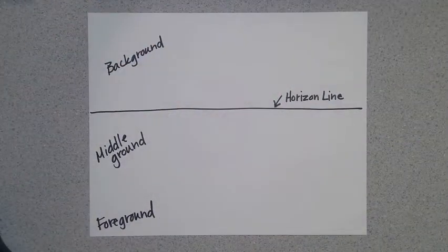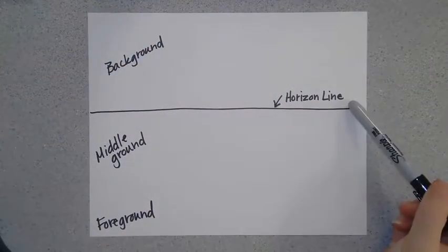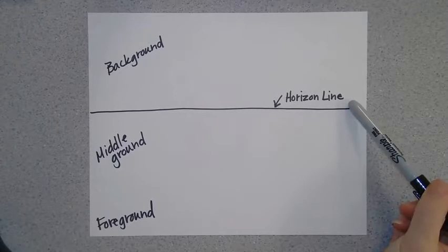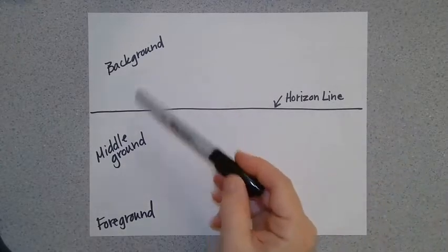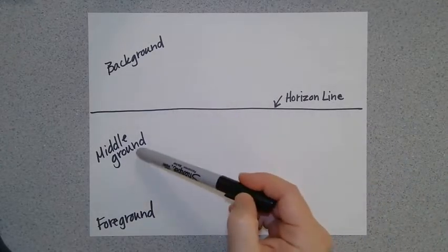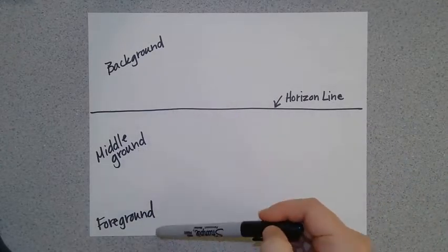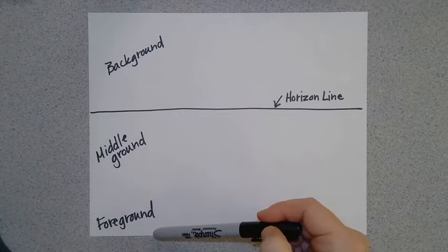A landscape has four parts: the horizon line, the background, the middle ground, and the foreground.